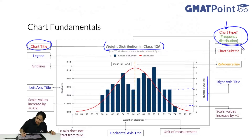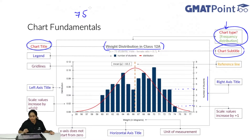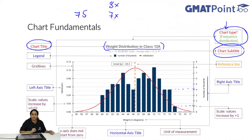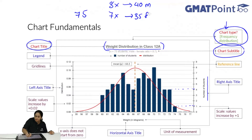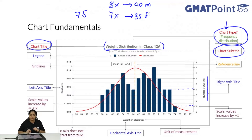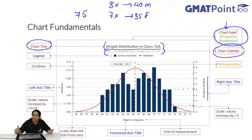The chart subtitle contains a very important clue. We are told that there are 75 students and the male-to-female ratio is 8x to 7. So there are 8x male students and 7x female students, giving 15x equals 75, so x equals 5. That means there are 40 male students and 35 female students. So you should read each part of the chart - the chart title and the subtitle - very carefully because important clues can be hidden in these areas.